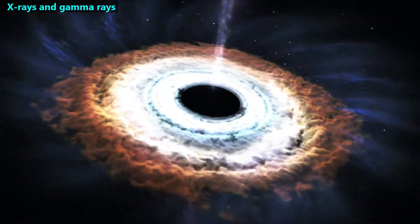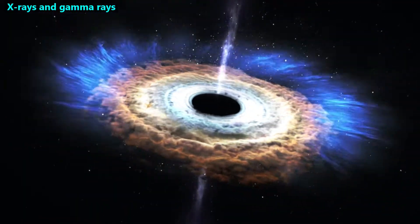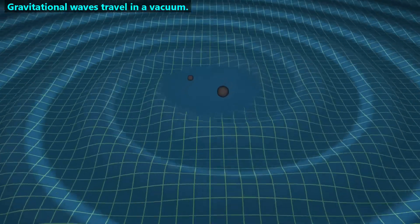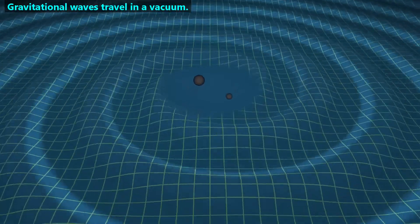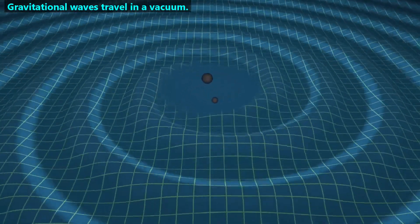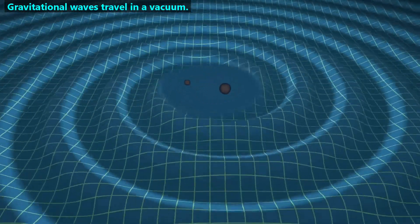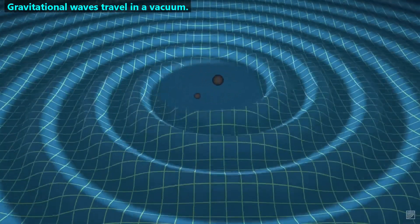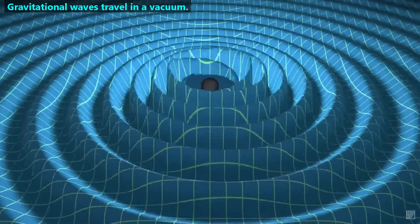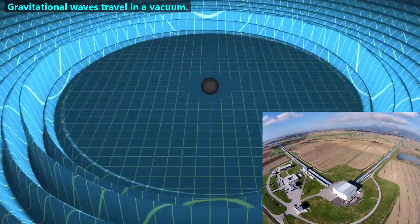Although all electromagnetic waves can travel in a vacuum, this is not unique to them. For example, gravitational waves can also travel in a vacuum. These gravitational waves traveled across many trillions of miles of outer space to reach our instruments on Earth.